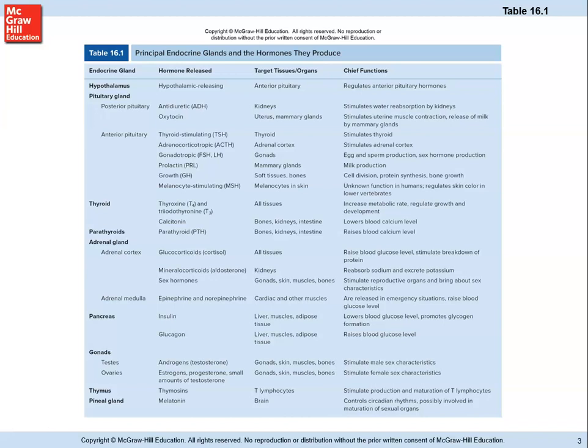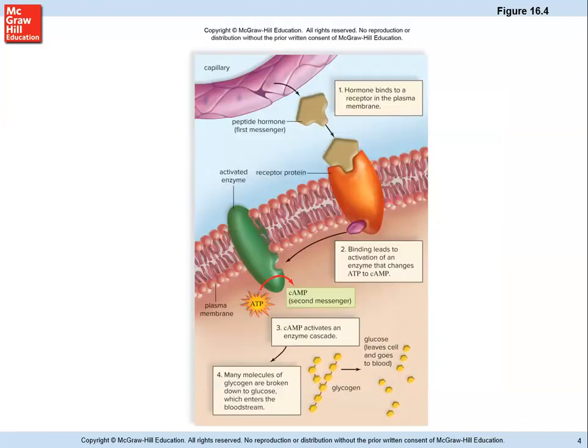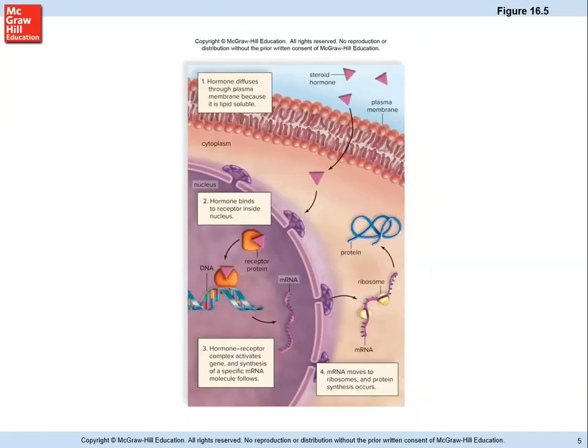For a non-fat-based hormone — a peptide or protein-based hormone — there must be a receptor protein on the outside of the cell. When it attaches, that triggers a chain reaction inside the cell, but the hormone itself doesn't enter the cell. It acts as a trigger or catalyst for a series of reactions, which is how non-fat-based hormones work.